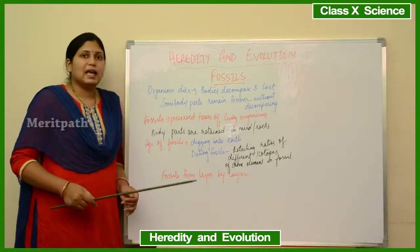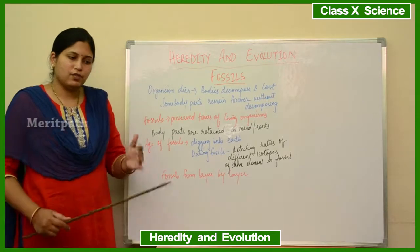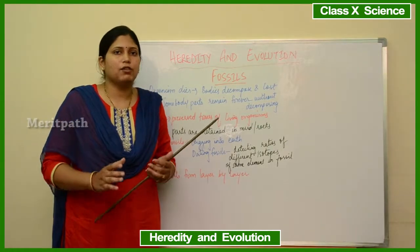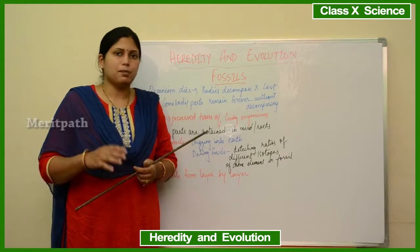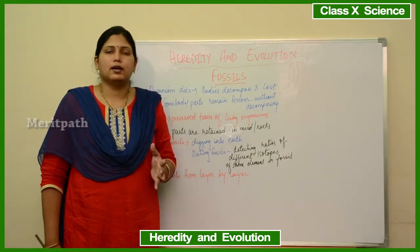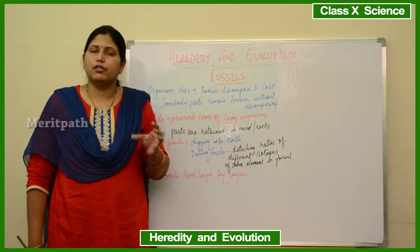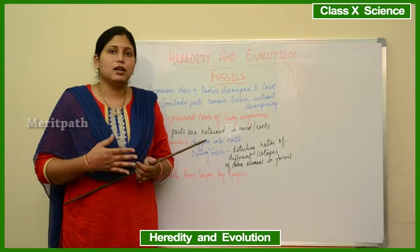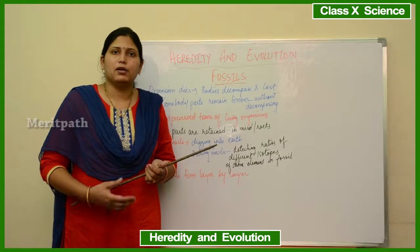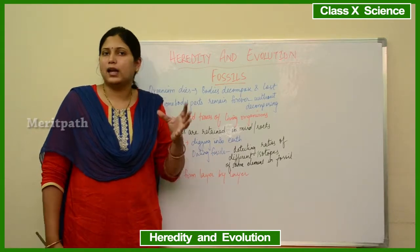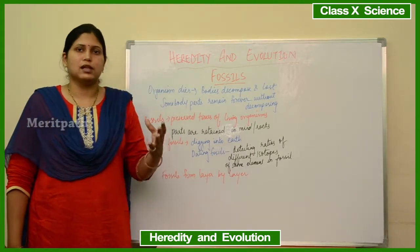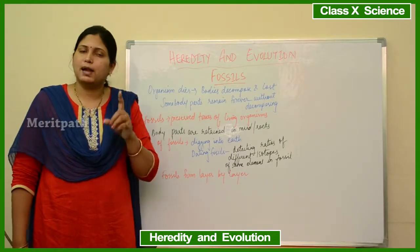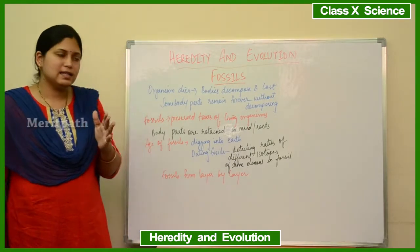How can we determine the age of a fossil? If we are digging the earth at a shallow depth and find a fossil, we can say it is a very young fossil. But if we dig very deep into the earth and find the fossil in deeper layers, we can say it is a very old fossil. So the depth of the fossil determines its age.